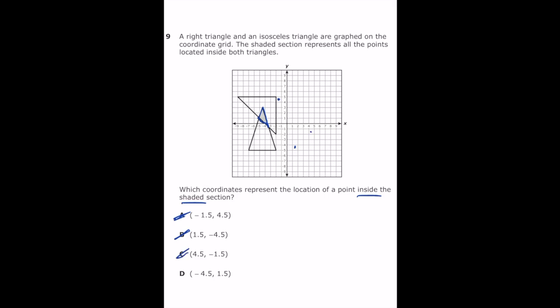Letter D is negative 4.5 to the left and 1.5 up. And if we graph that, that's going to be right inside that shaded section. So the correct answer is letter D.